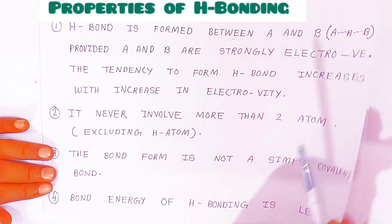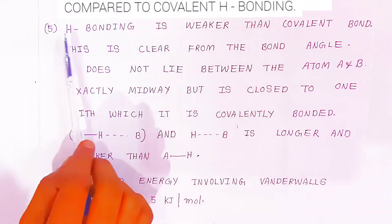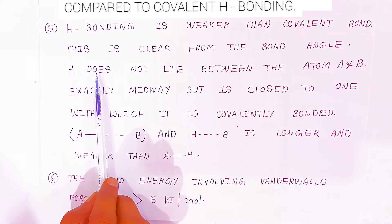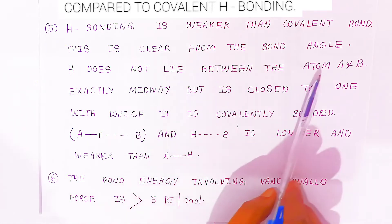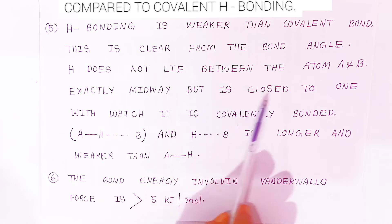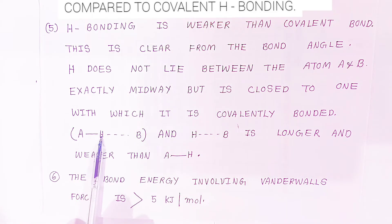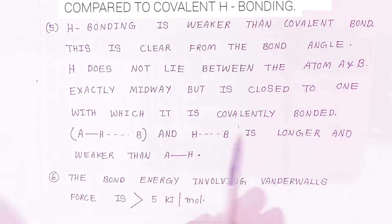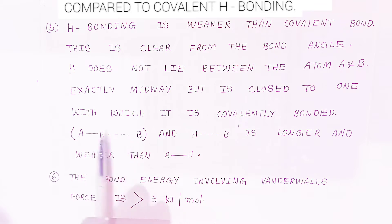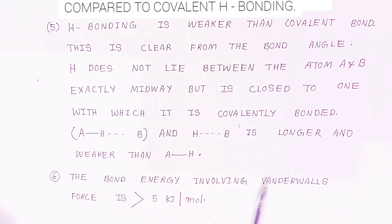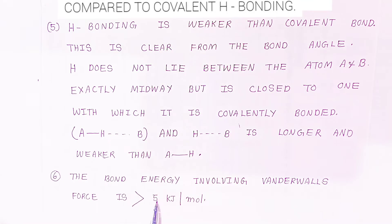The bond energy of hydrogen bonding is always less compared to a covalent bond — hydrogen bonding is weaker than a covalent bond. This is clear from the bond angles. Hydrogen does not lie exactly midway between atoms A and B, but is closer to the atom to which it is covalently bonded. The hydrogen bond length is larger than the A-H covalent bond. The bond energy involving van der Waals force is always greater than 5 kJ/mol.